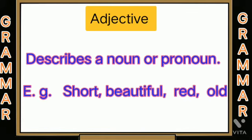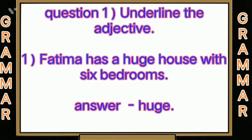Adjective describes a noun or pronoun. Examples: short, beautiful, red, old. Question one: underline the adjective. First — 'Fatima has a huge house with six bedrooms.' Answer: huge.